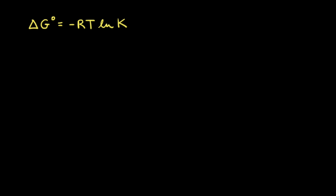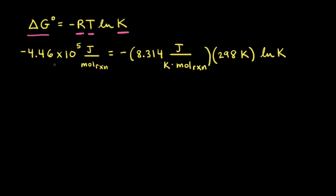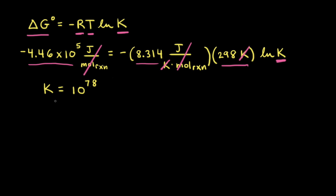Now that we've calculated ΔG°, let's calculate the equilibrium constant K at 25°C using ΔG° = −RT ln K. Plugging in: ΔG° = −4.46 × 10⁵ J/mol, R = 8.314 J/(K·mol), and T = 298 K (25°C + 273). The kelvin and joules per mole cancel out, and solving for K gives an equilibrium constant of approximately 10⁷⁸.